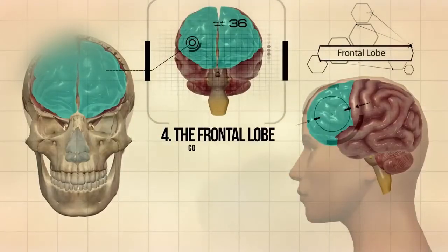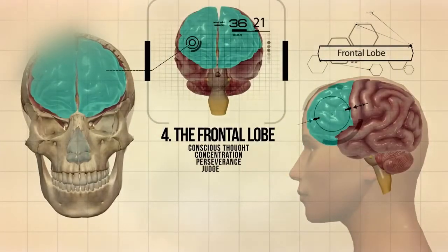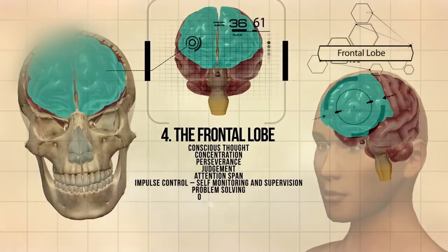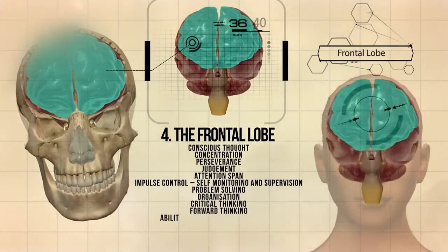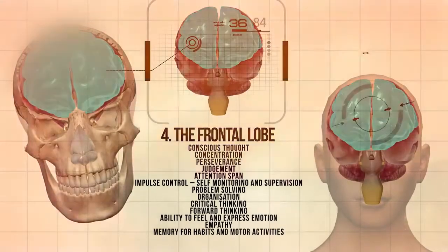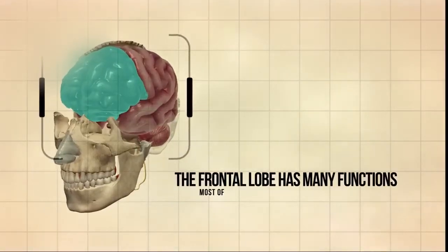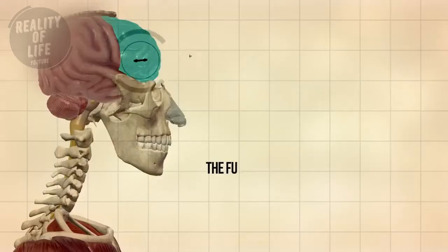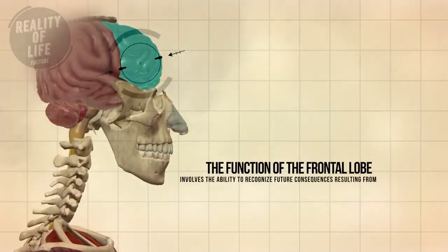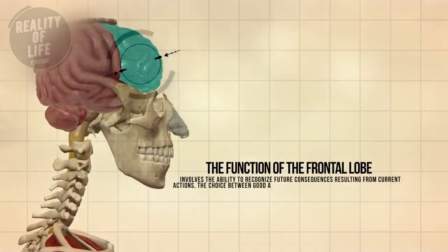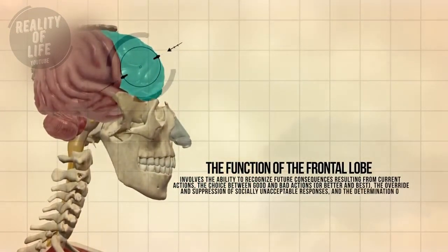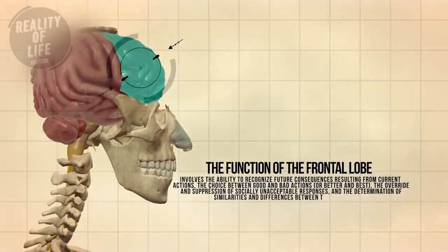The frontal lobe is responsible for conscious thoughts, concentration, perseverance, judgment, attention span, impulse control — which is self-monitoring and supervision — problem solving, organization, critical thinking, forward thinking, the ability to feel and express emotion, empathy, and memory for habits and motor activities. The frontal lobe has many functions, most of which center on regulating social behavior, including the ability to recognize future consequences resulting from current actions, the choice between good and bad actions, the override and suppression of socially unacceptable responses, and the determination of similarities and differences between things or events.